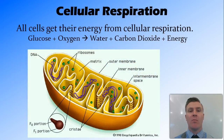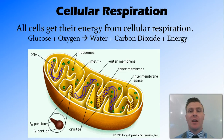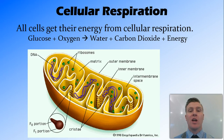You remember from previous topics that all cells gain their energy from a process called cellular respiration. Cellular respiration occurs in the mitochondria inside every cell and uses glucose and oxygen, which produces water and carbon dioxide and energy in the form of ATP.